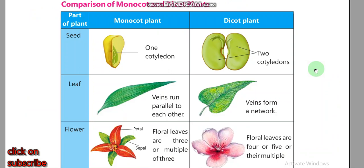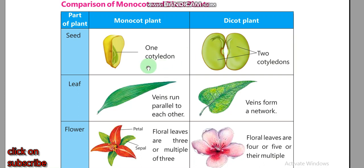Now, a comparison of monocot and dicot plants. First, looking at seeds: monocot plant seeds have one cotyledon, as you can see in the diagram. Dicot plants have two cotyledons in their seeds — one and two cotyledons. For leaves, the veins of monocot plants run parallel to each other, while the leaves of dicot plants have veins in the form of a network.